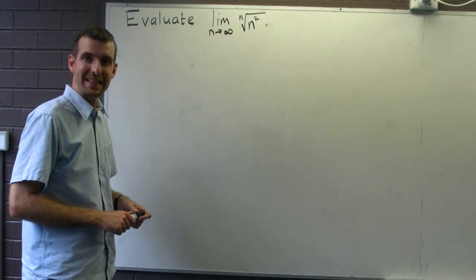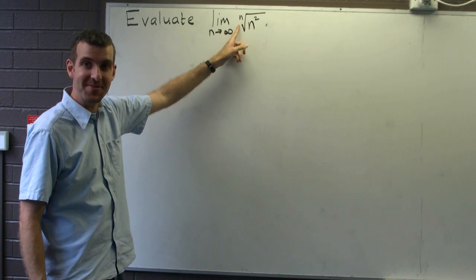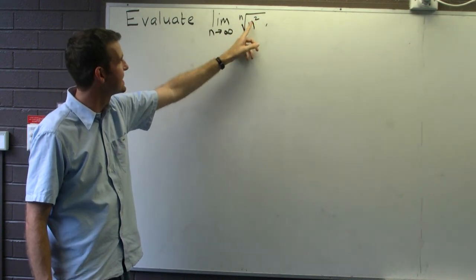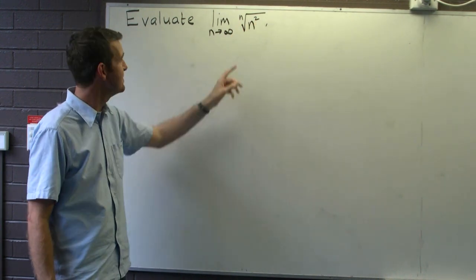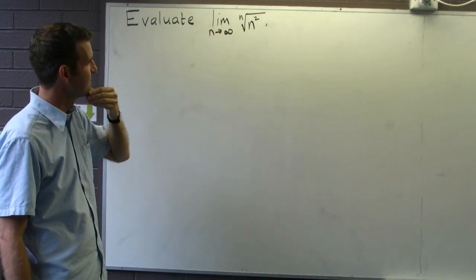Let's have a look at the following limit of a sequence. Our sequence is the nth root of n squared, and we're interested in the limit as n approaches infinity. So how do we do it?